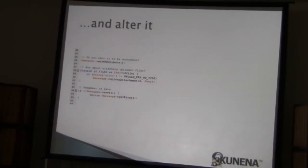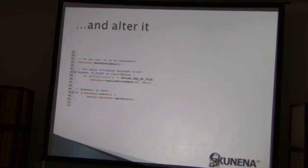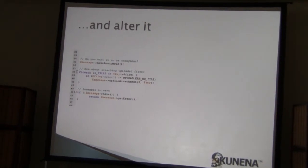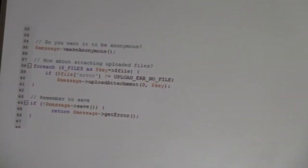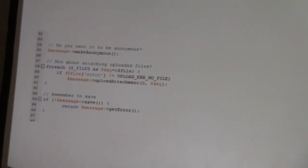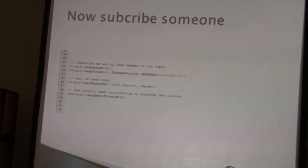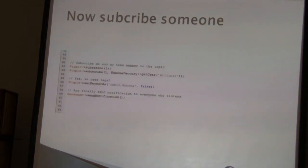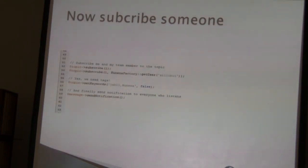You can also alter the topic — make the user anonymous, hide information, attach files — and then save it. There are a lot of functions available. For subscriptions, I always want myself and a friend subscribed, so I subscribe to them. Then I add some keywords to the topic, and sending email to everyone listening is just one line. You can do a lot with just a few lines of code.